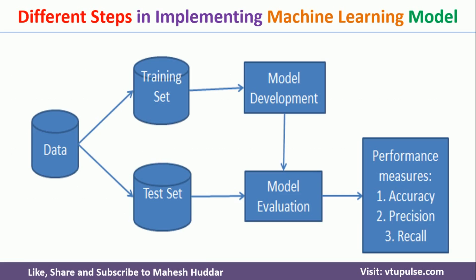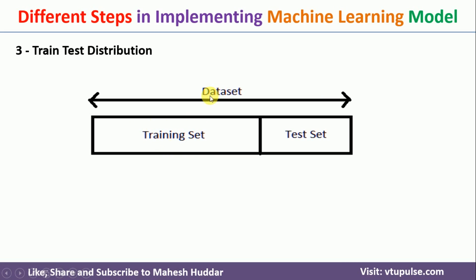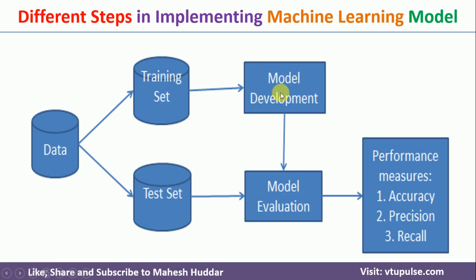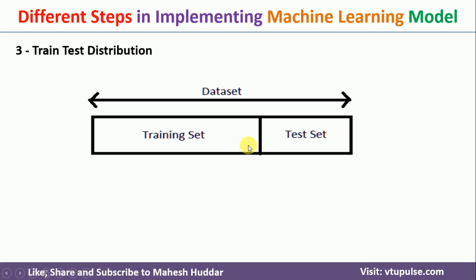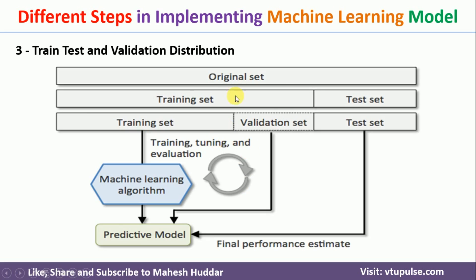Once the data is collected and preprocessed, the next step is to divide the data into training and testing parts. One approach is to split the whole data into a training set and a testing set, train your model on the training set, and evaluate it on the testing set. Another approach is to further divide the training set into a training part and a validation set, so the model is validated before being tested on the test data, achieving better results.